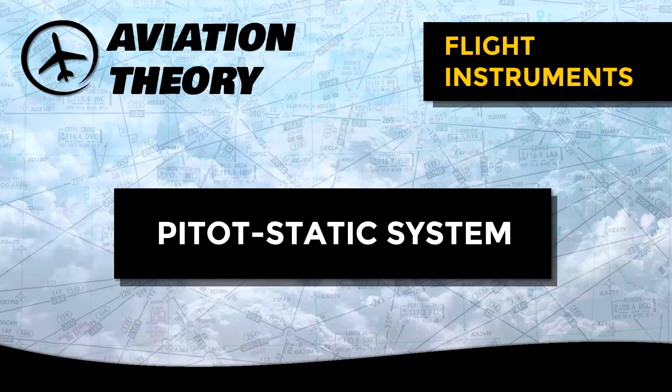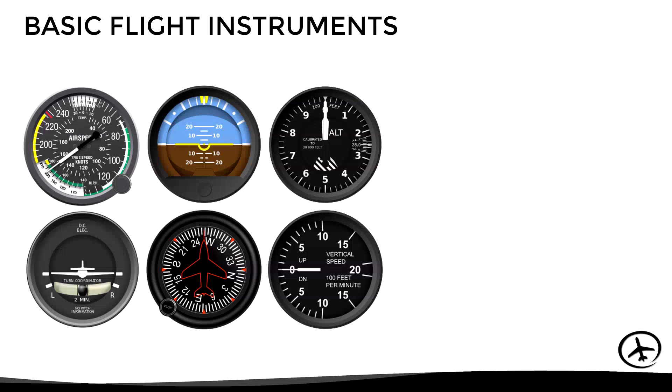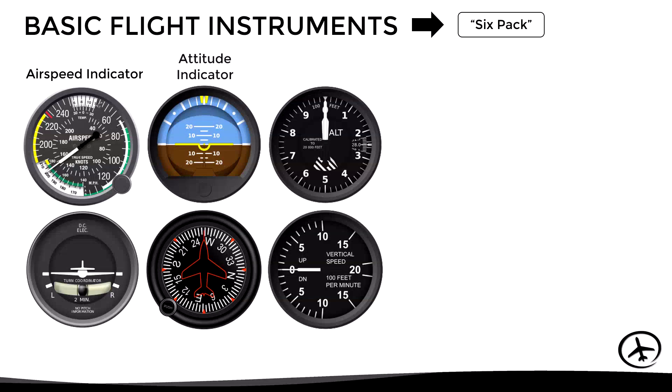Today we will talk about the pitot-static system, which is a system that feeds some of the basic flight instruments. The basic flight instruments are these six instruments that we will find in any aircraft, since they provide information about the most important parameters to consider when flying an airplane. Due to the fact that there are six instruments and they are in this arrangement, they are sometimes referred to as the six pack. Here we can find the airspeed indicator, the attitude indicator, the altimeter, the turn coordinator, the heading indicator, and the vertical speed indicator.